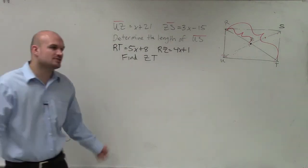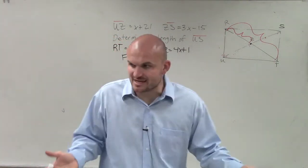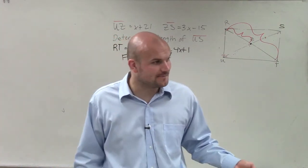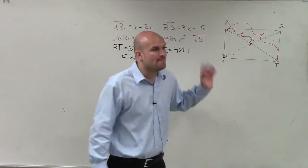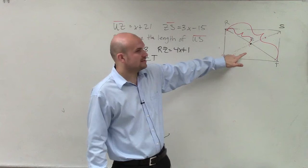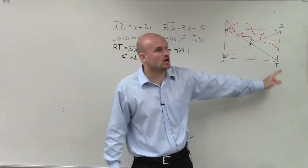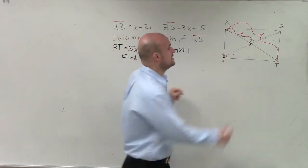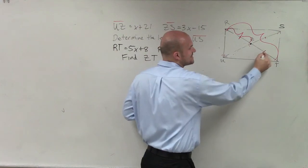Now again, we need to know what our definitions of our bisectors are, our diagonals. We know that diagonals bisect each other. So would it make sense to say that RZ times 2 is equal to RT? Because really, this length is the same as that length.